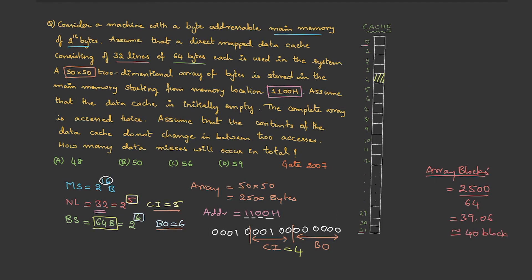But the cache only has 32 lines, so some blocks must be replaced. During the first access, blocks 1 through 32 fill the cache lines sequentially starting from line 4. Once all 32 lines are filled, blocks 33, 34, and so on replace earlier lines, continuing until block 40. This replacement wraps around the cache.